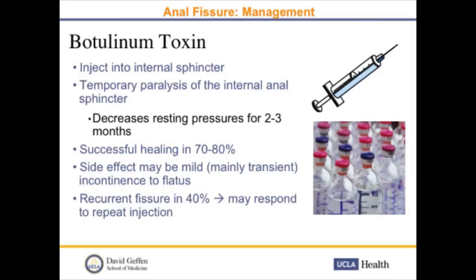If they don't heal with diltiazem, we proceed with Botox treatment. We usually have to document 12 weeks of treatment with diltiazem before the insurance company will pay for it. We inject into the internal sphincter, causing temporary paralysis of the internal anal sphincter and decreasing resting pressures for two to three months. It causes successful healing in 70 percent of patients. Side effects are mainly transient incontinence to flatus — incontinence to liquids or solids can occur but is rare. Patients with recurrent fissure may respond to repeat injection.